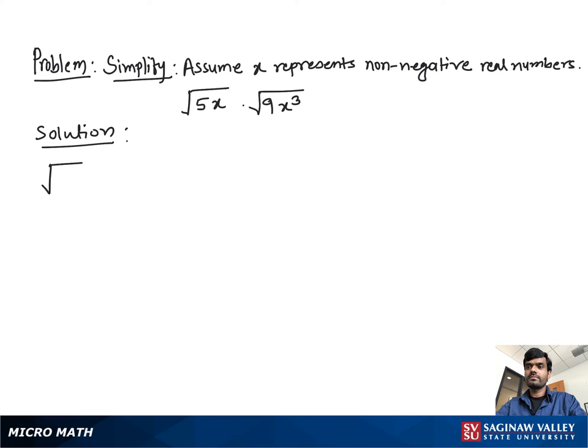Simplify square root 5x times square root 9x cube. What we do first is multiply the radicands: 5x times 9x cube. We multiply 5 times 9 which is 45, and x times x cube which is x to the fourth.